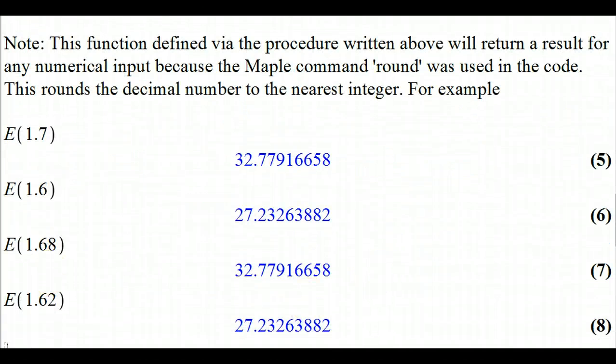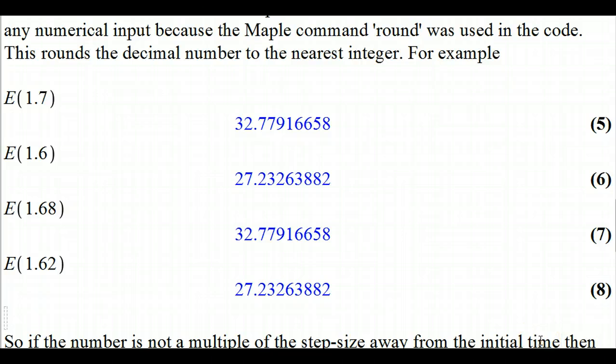But what if you want to know the value of an approximate at, say, 1.68, which is not a certain number of step sizes of 0.1 away from 0? What it's going to do is round it to the nearest step, or nearest t value away, which is going to be 1.7, and it's going to return the same value back. Likewise, if you try putting in 1.62, then you're going to get rounded down to 1.6, the closest t value, which is a certain number of steps of size 0.1 away from t equals 0, and it returns that value back to you.